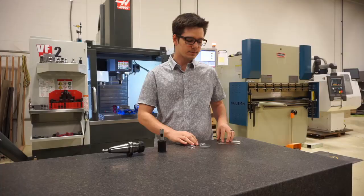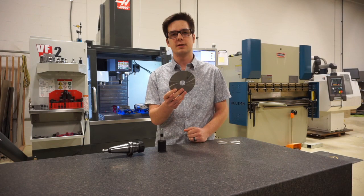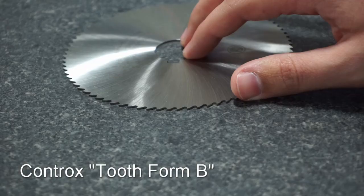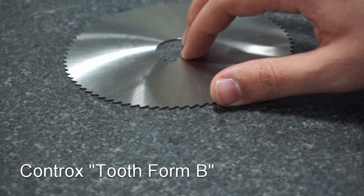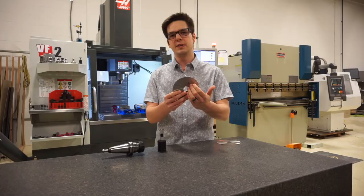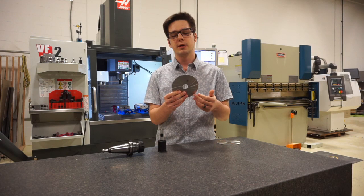The second blade we have here is our tooth form B. You'll notice that tooth is much deeper, features a different chip gullet design, and also features a 15 degree positive rake angle. You might also notice that there are only 80 teeth on this blade as opposed to 160.